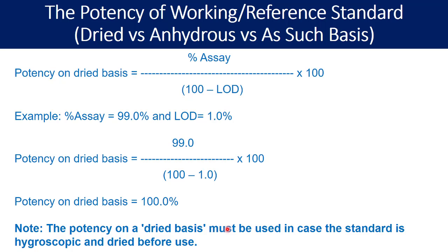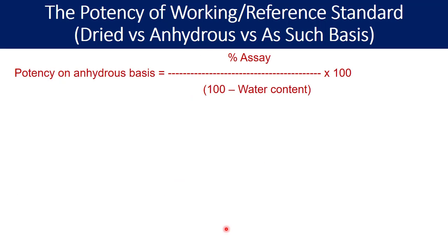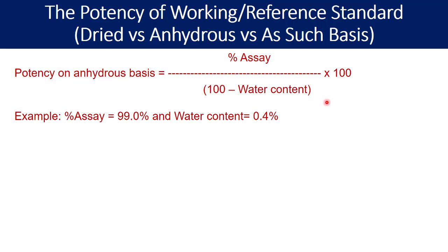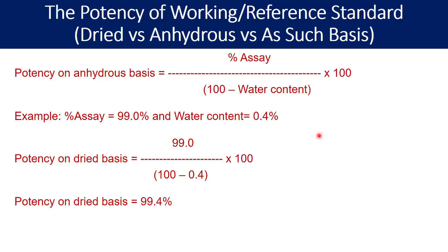The second term is potency on an anhydrous basis. The calculation formula is: percent assay divided by (100 minus water content, also called moisture content), multiplied by 100. In a simple example where the percent assay is 99.0% and water content is 0.4%, substituting the values into the formula, you will find that the potency on an anhydrous basis is 99.4%.